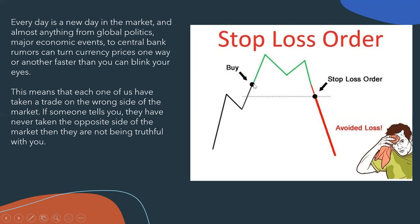Here's an example of a stop loss order. Let's say you put a buy on GBP/USD right where the buy is, and then it goes up and you're making your profits. But you also put a stop loss on it just in case it goes the opposite direction. Your take profit is nowhere in sight, and then all of a sudden the price comes back down and hits your stop loss — right there you just avoided losing a major percentage of your trading account.